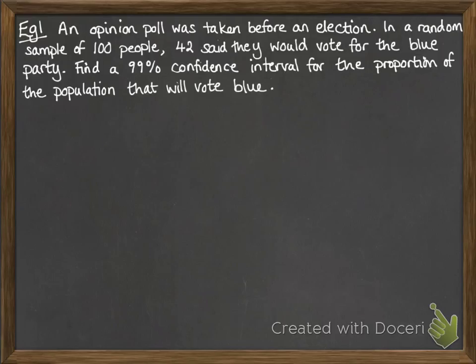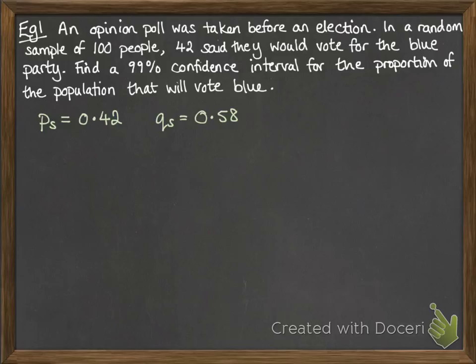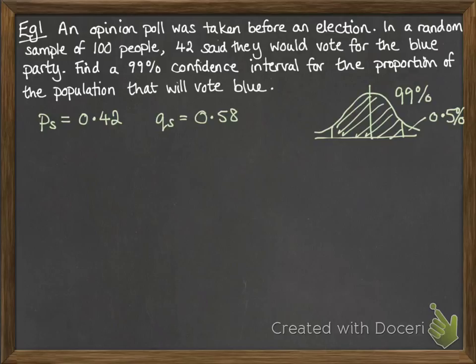Let's have a look at an example. We've got an opinion poll taken before an election. In a random sample of 100 people, 42 said they would vote for the blue party. We want to find a 99% confidence interval for the proportion of the population that we think will vote blue. So first of all, our proportion in our sample of successes is 0.42 — that's 42 out of 100. This also gives us the proportion for failures as being 1 minus that, which is 0.58. We're looking for a 99% confidence interval, so reading off our Z value from the diagram gives us 2.576.